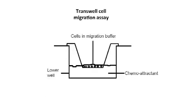The second related method, the transwell cell migration and invasion assay, is also highly accessible. Following the plating of cells onto a transwell membrane, also commonly known as a Boyden chamber, their migration abilities toward a chemoattractant gradient may be measured. Both of these highly accessible experimental procedures are extremely valuable in many areas of research.